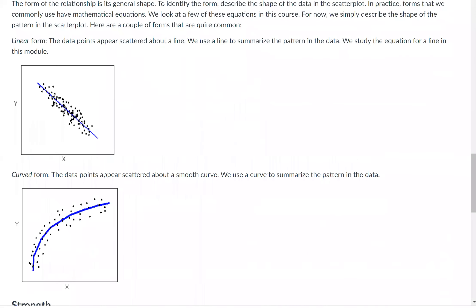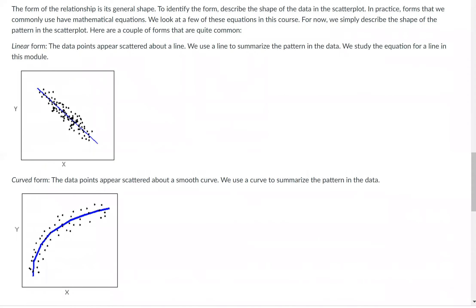Let's scroll down and look at that now. We're going to have a linear form, kind of like the pictures we were drawing over there. The data points appear scattered about a line. We use a line to summarize the pattern in the data. We study the equation for a line in this module.